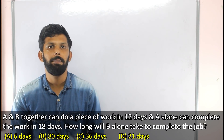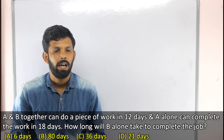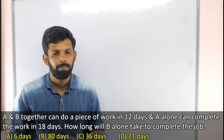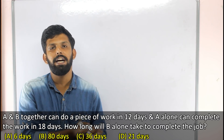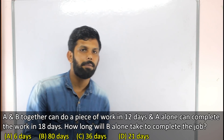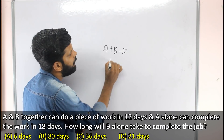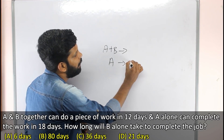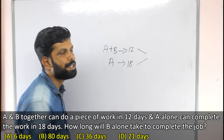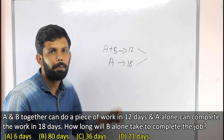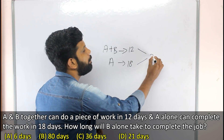Next question: A and B together can do a piece of work in 12 days. A alone can complete the work in 18 days. How long will B alone take to complete the job? We apply the LCM method. A plus B together take 12 days; A alone takes 18 days. The LCM of 12 and 18 is 36. Total work is 36 units.